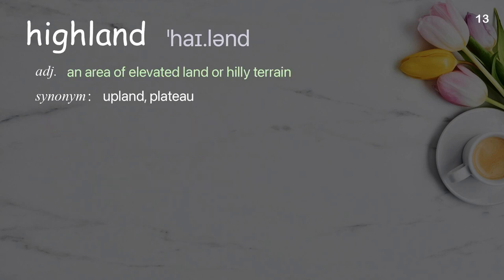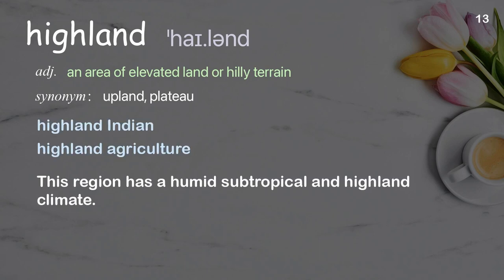Highland: an area of elevated land or hilly terrain. Examples: highland Indian, highland agriculture. This region has a humid subtropical and highland climate.